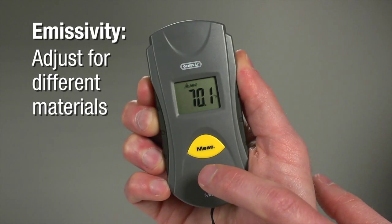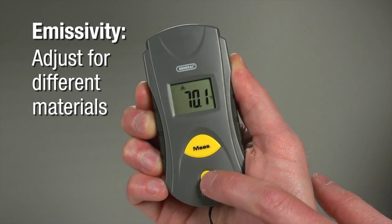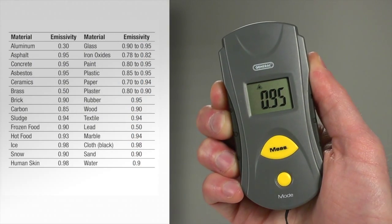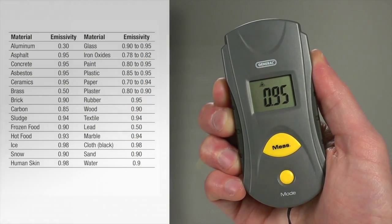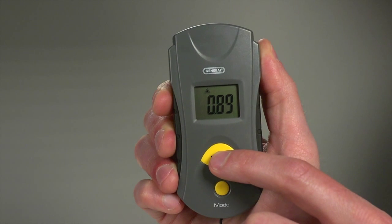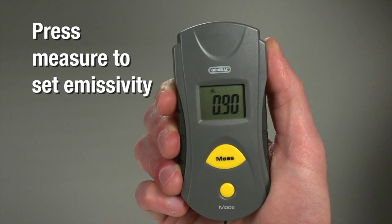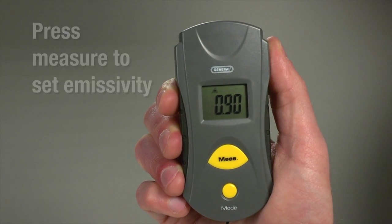Press five times for emissivity mode. Objects reflect or absorb IR radiation. This mode lets you adjust for it. The user's manual has a handy table. Water has emissivity of 0.9. In this mode, press measure to get 0.9 emissivity. Now press mode to return to measuring and proceed.